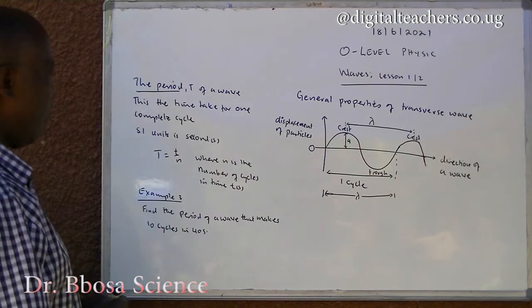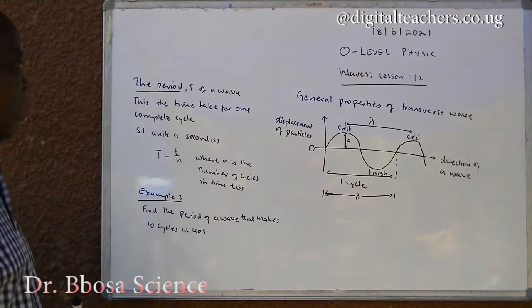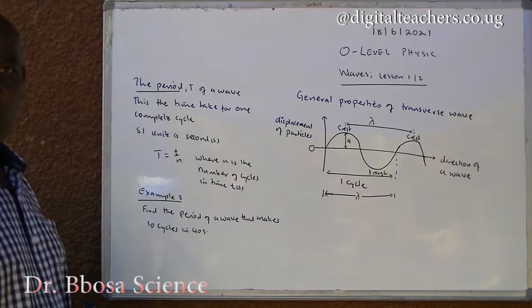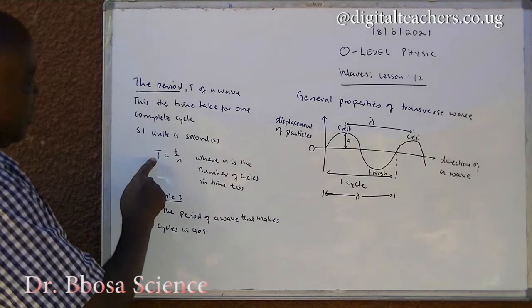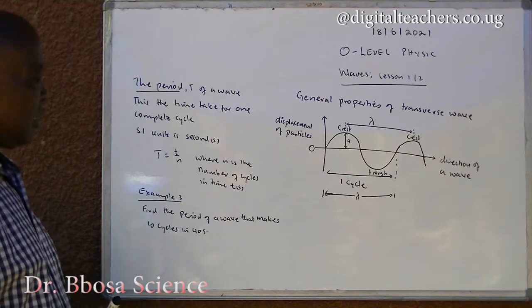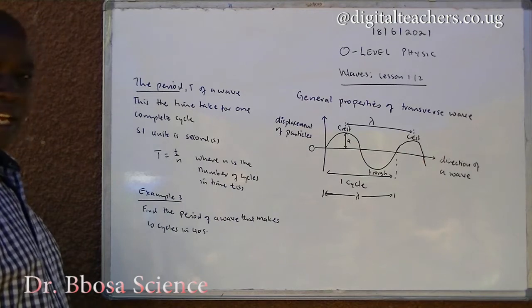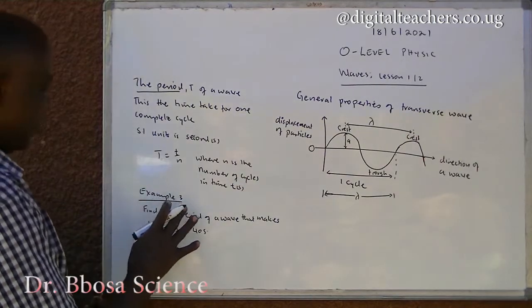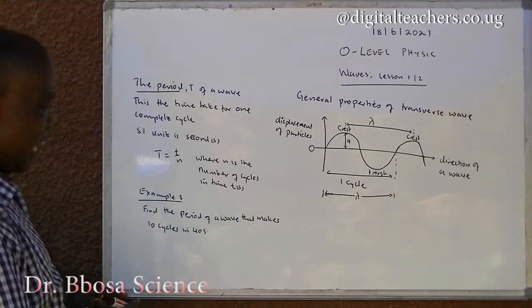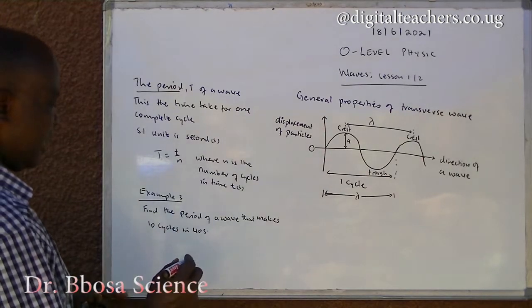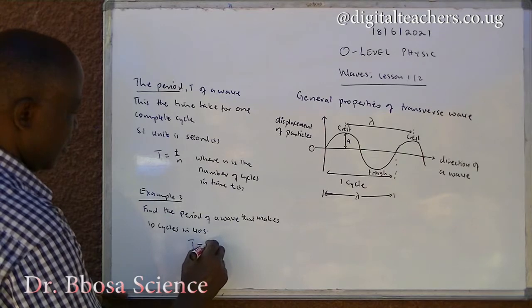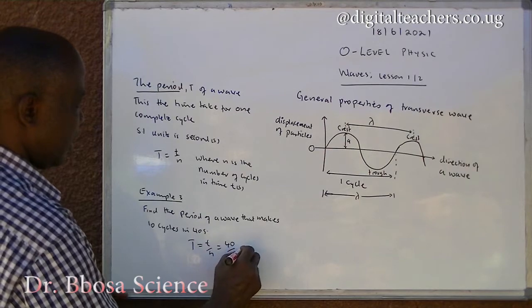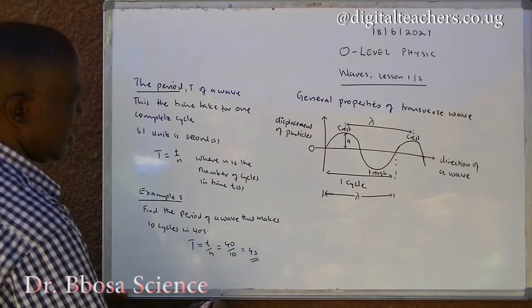Period T of a wave is the time taken for one complete cycle. SI units is seconds. Period T is equal to small t over n, where n is the number of cycles in time t seconds. Example: Find the period of a wave that makes 10 cycles in 40 seconds. Period is equal to t over n, equal to 40 over 10, which is equal to 4 seconds.